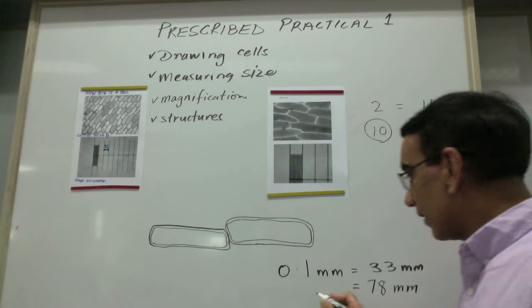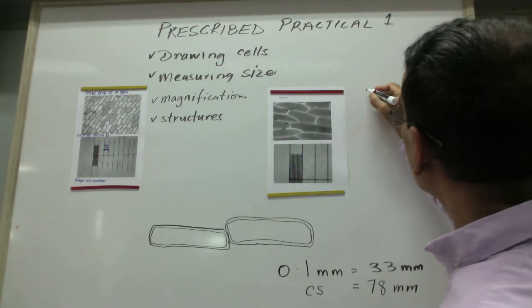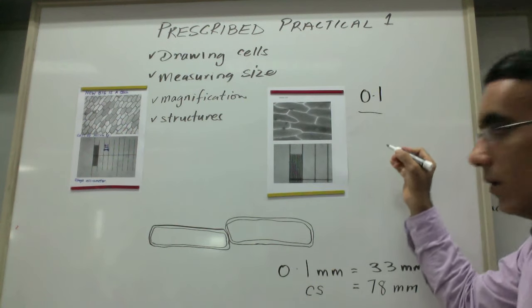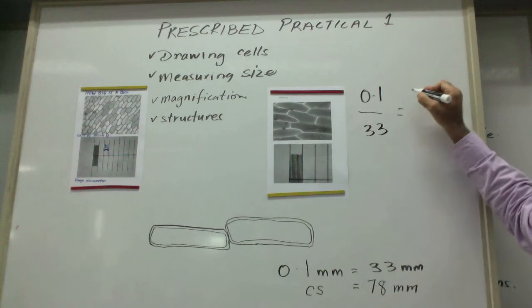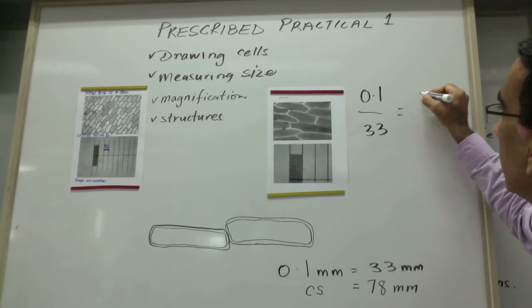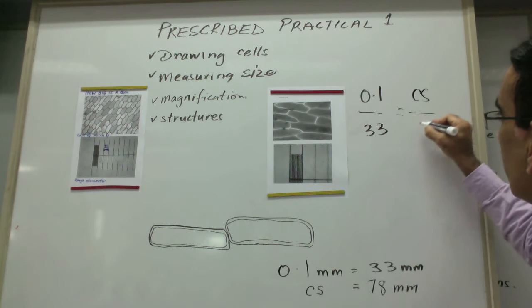So we set up an equation like this: 0.1 divided by 33 is equal to the unknown, the cell size, divided by 78.